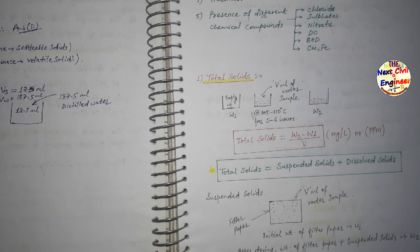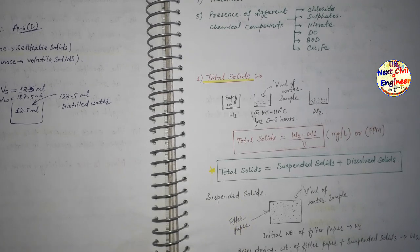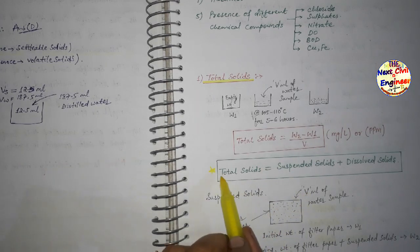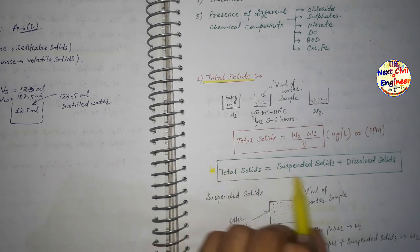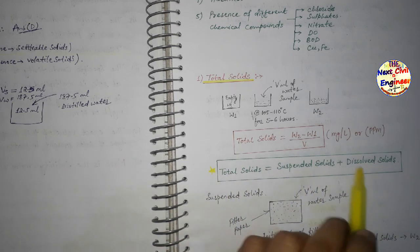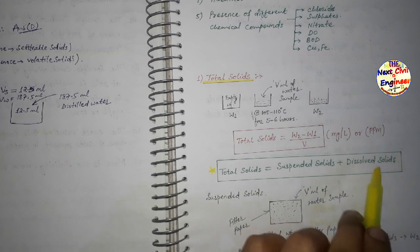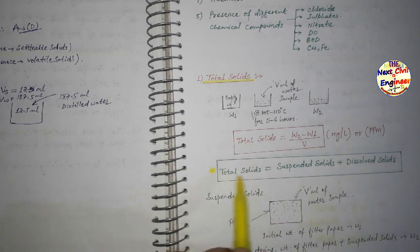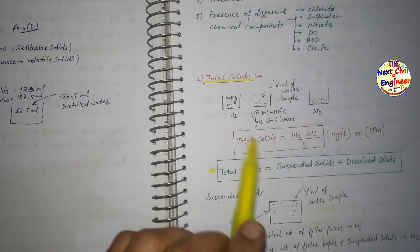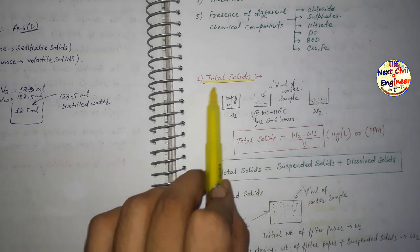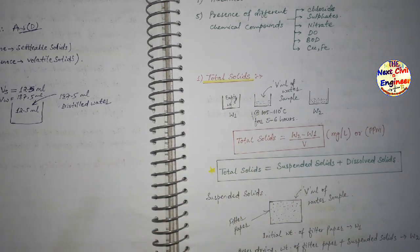Dissolved solids equals total solids minus suspended solids. From this, total solids equals suspended solids plus dissolved solids. So if we have to find dissolved solids, subtract suspended solids from total solids. One more important point: as per Indian Standard (IS), the permissible limit of total dissolved solids (TDS) is 500 to 1000 ppm. This was the key information regarding total solids.